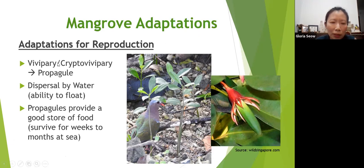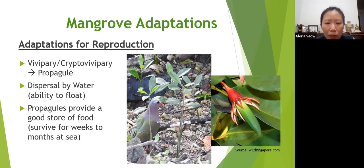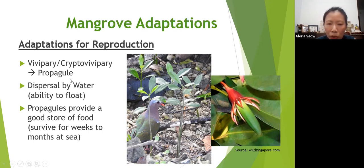Mangroves are also adapted for reproduction through a unique feature called vivipary. This means the seedlings start to sprout while still attached to the parent tree, getting nutrients from it and growing a long root. You can see in this picture the green structure which is the root still on the parent tree. At some point it falls off — this whole structure is called a propagule. Cryptovivipary means the seeds have sprouted inside but are hidden within the fruit wall so you cannot see them.